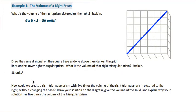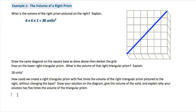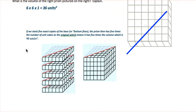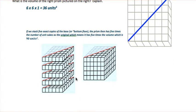How could we create a right triangular prism with 5 times the volume of the right triangular prism pictured, without changing the base? If we stack 5 exact copies of the base or bottom floor, the prism will have 5 times the number of unit cubes as the original, which means it has 5 times the volume — 90 cubic units. We're taking this and stacking 5 on top of each other.